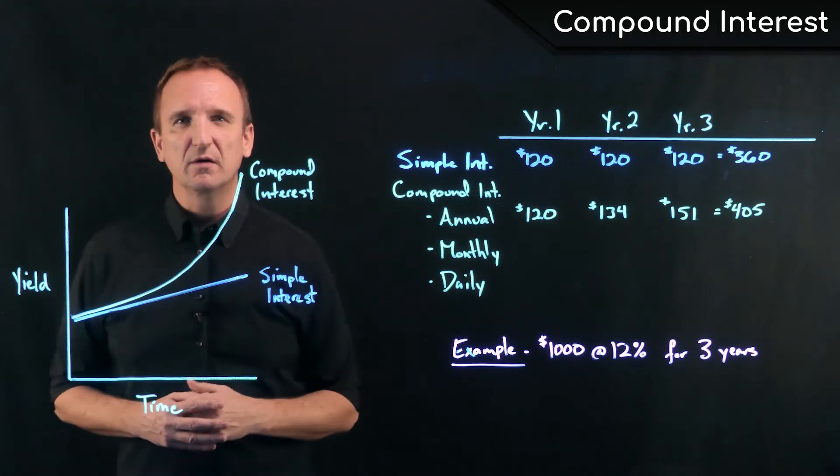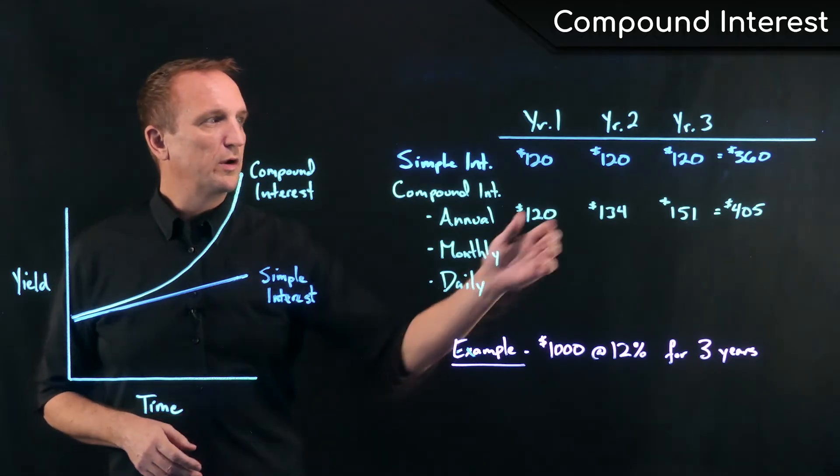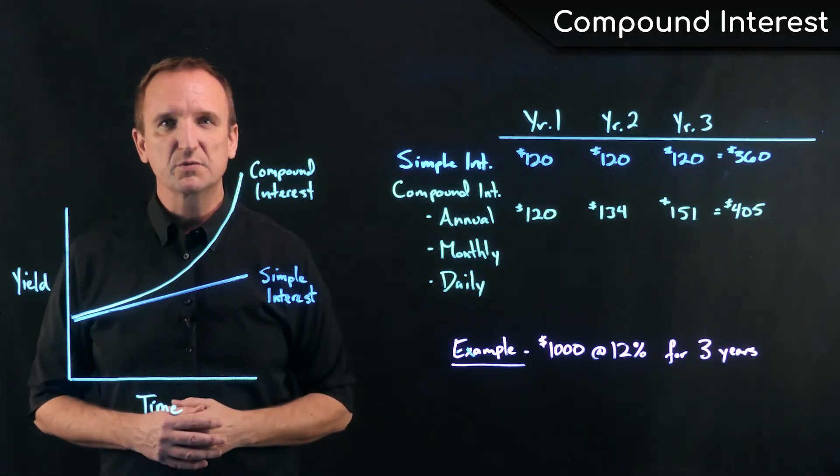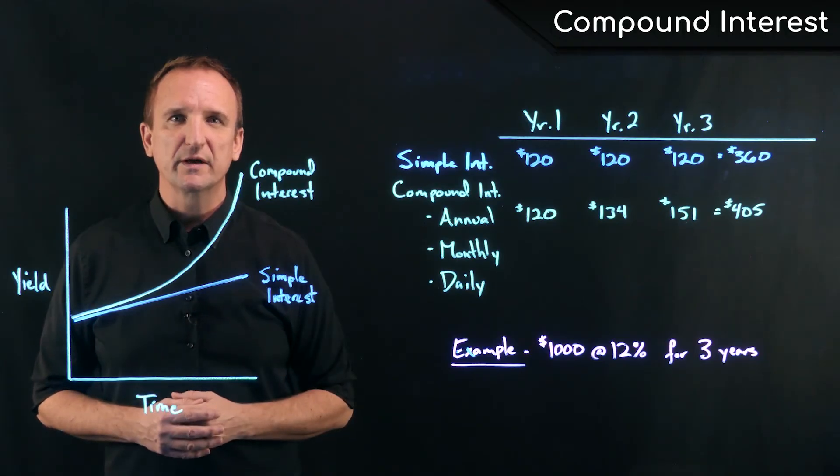So as you can see, with compound interest, we earn an extra $45 worth of interest over the life of the three-year investment.